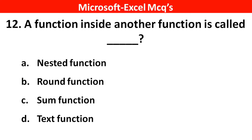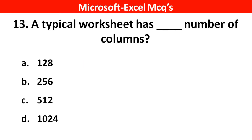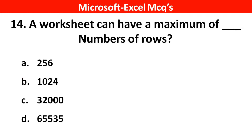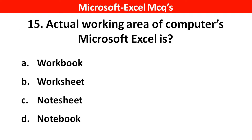Next question: a function inside another function is called? Right answer is option A, Nested function. Next question: a typical worksheet has how many numbers of columns? Right answer is option B, 256 columns. A worksheet can have a maximum of how many rows? Right answer is option D, 65,535. The actual working area of Microsoft Excel is? Right answer is option B, worksheet.